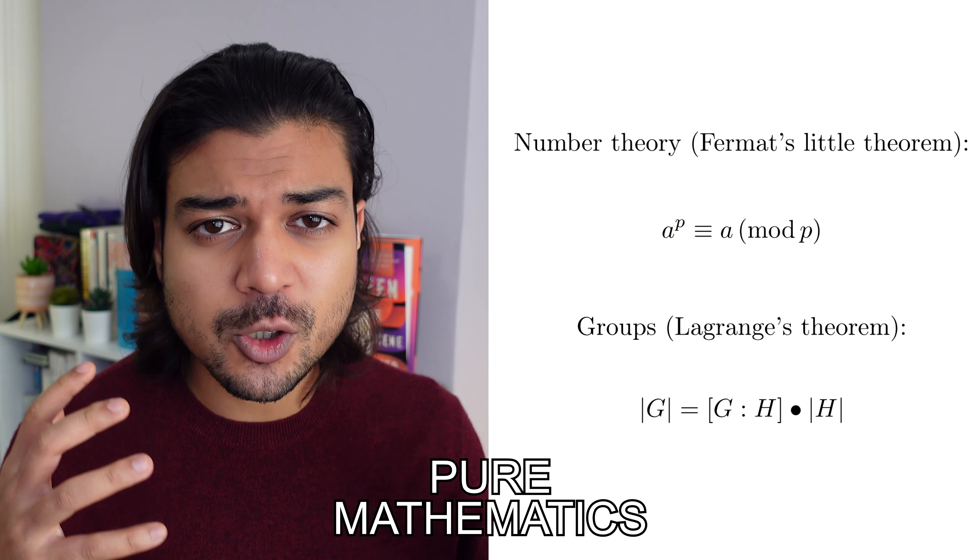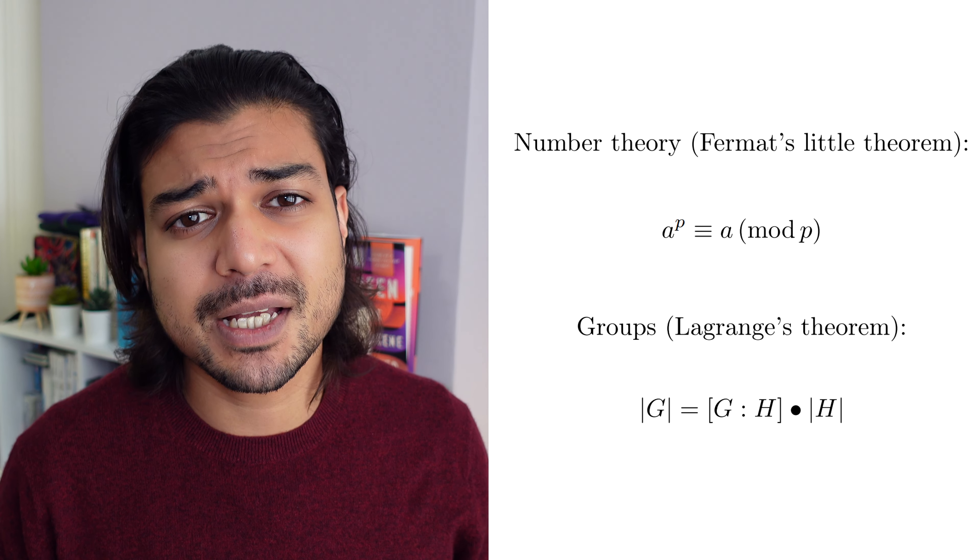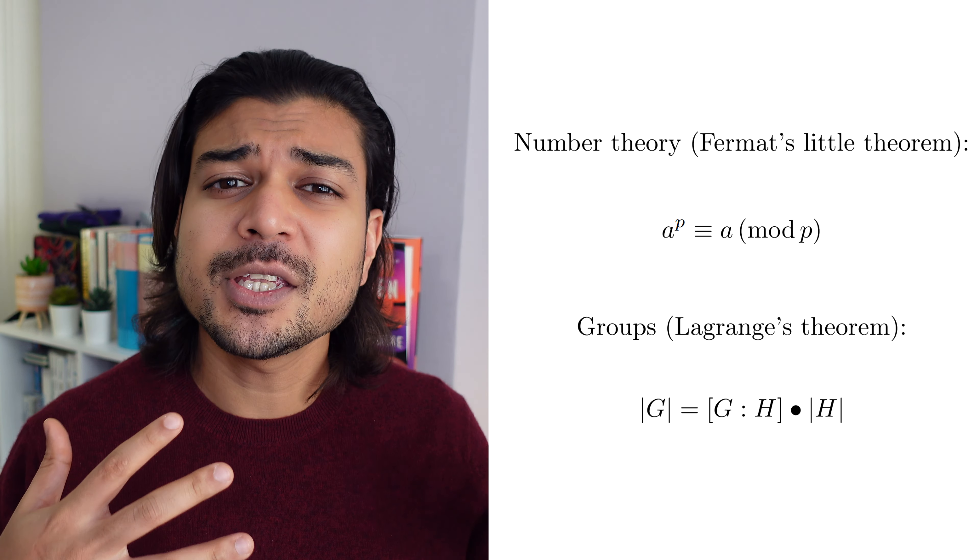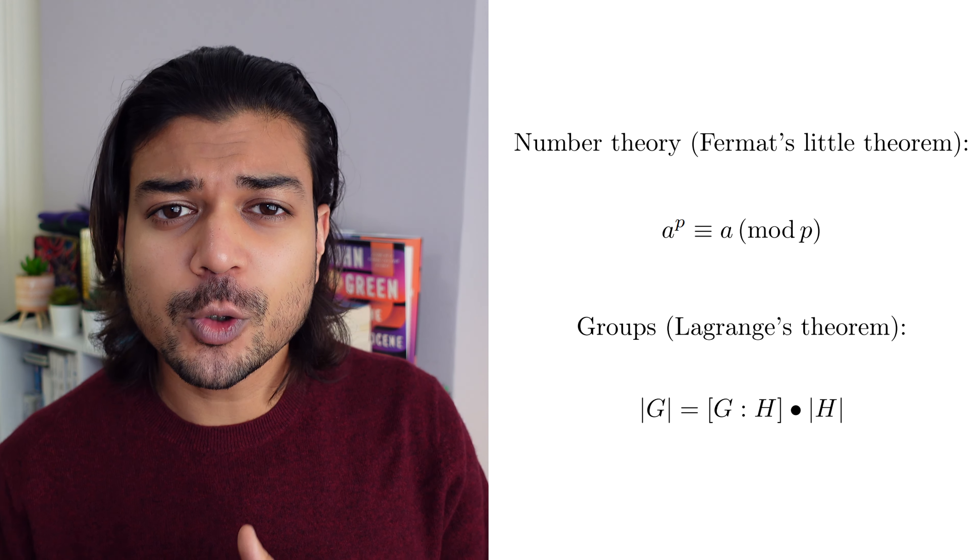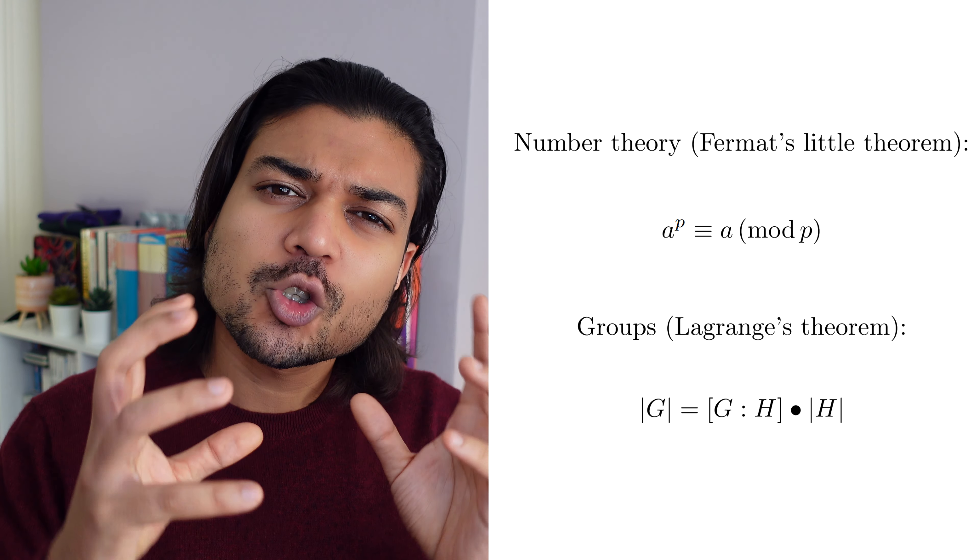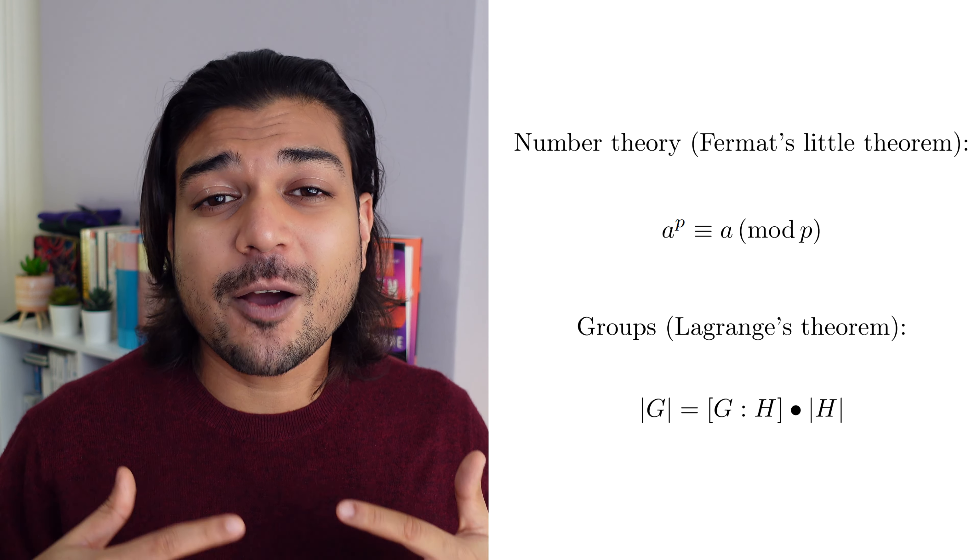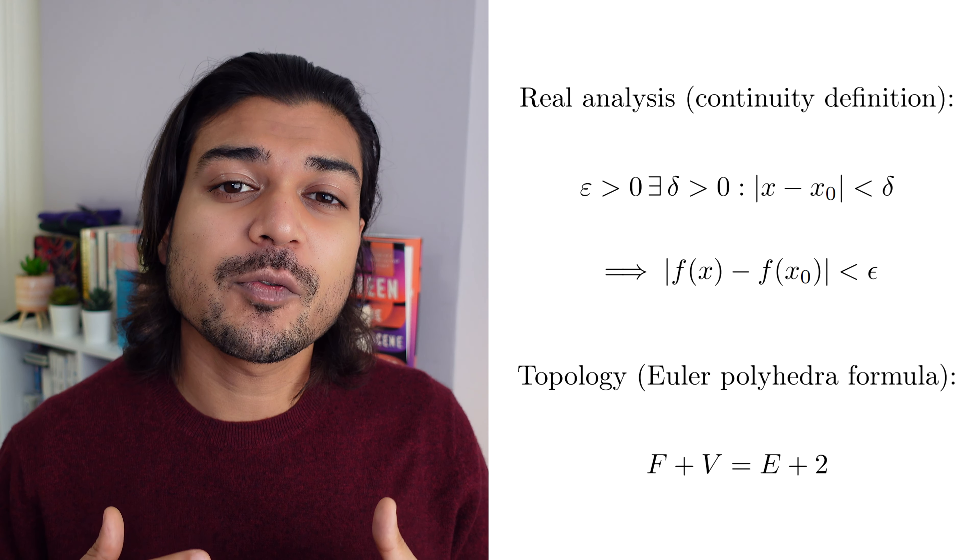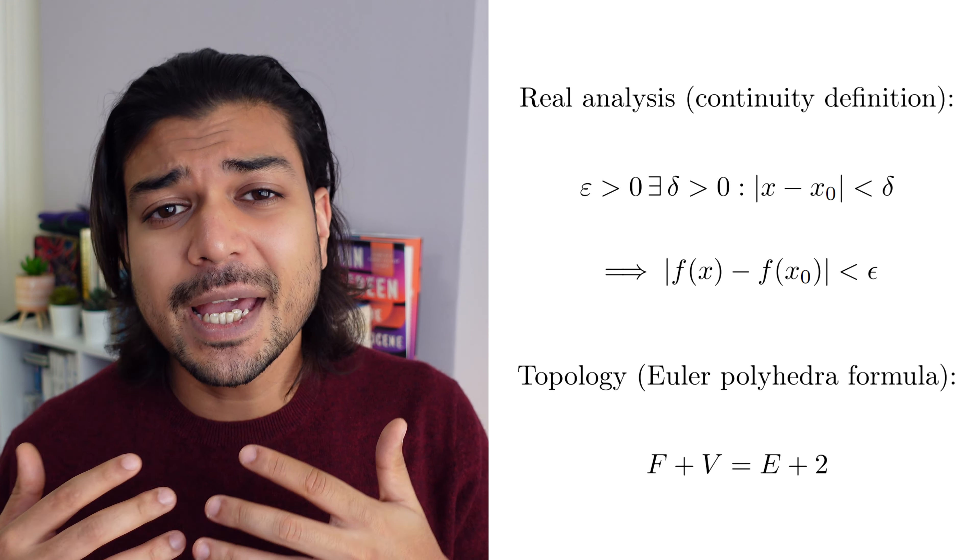Pure mathematics is the core of any undergraduate degree and concerns itself with the proofs and underlying truths of mathematics. For example, you have number theory where you play around with infinities and the real numbers, or groups where you see the underlying structure and symmetries of various objects. And then you have real analysis, which concerns itself with continuity of functions and what it means for a function to be differentiable or integrable.